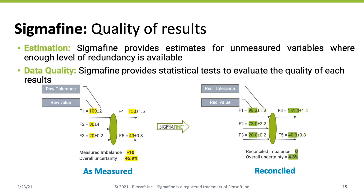Let's look at data quality. Here we have five flows — three going in and two going out — and an imbalance of 10, with an uncertainty of 5.9% on this simple system. Looking at the reconciled data set, the uncertainty has been reduced to 4.3% and the imbalance has been eliminated. For example, flow two had an uncertainty of 4 on 80, which is 5%, and that uncertainty has been reduced to 2.2 on 73 — a 40% reduction in uncertainty without changing the technology of the instrument. This is the power of data reconciliation.